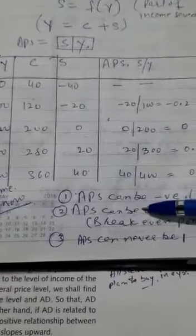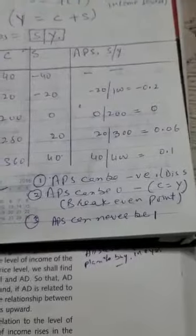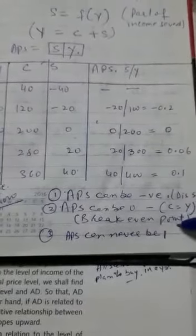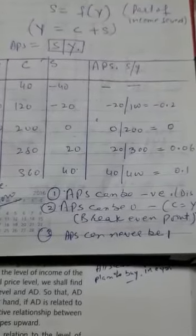And we know what we know from this point. In the previous videos, I have told you. This is known as the break-even point. What is break-even point? When your saving is 0. Or you can say when your consumption is equal to your income.